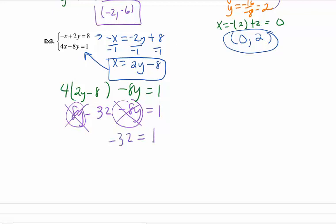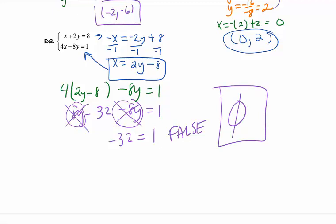Whenever my variables disappear, I ask myself if it's a true or false statement. This is false, which means they never intersect. My answer is empty set. But truly what it means is that these two lines are parallel, picture-wise.